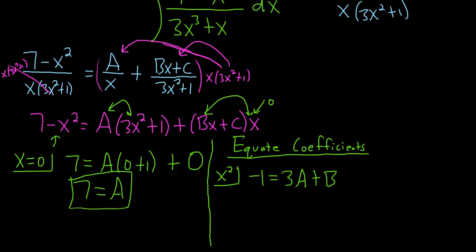So you're just matching coefficients. So again on the left hand side there's a negative 1 here. On the right hand side we get 3A squared, so 3A. And then Bx squared, so B. The good news is we have A.